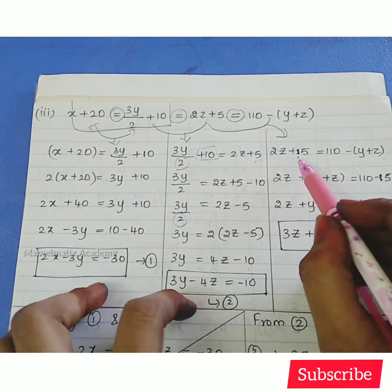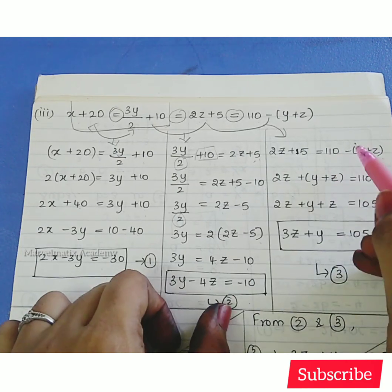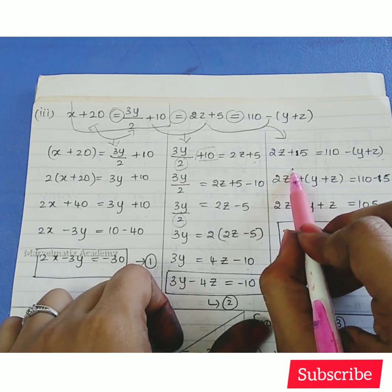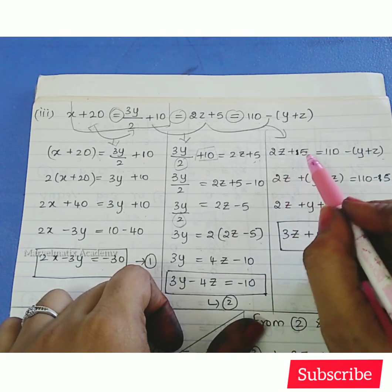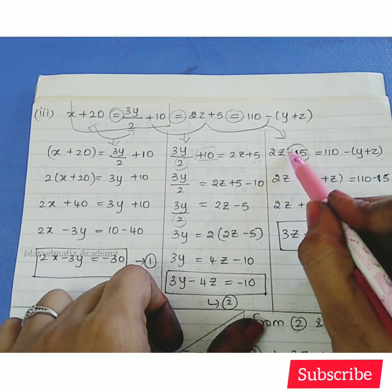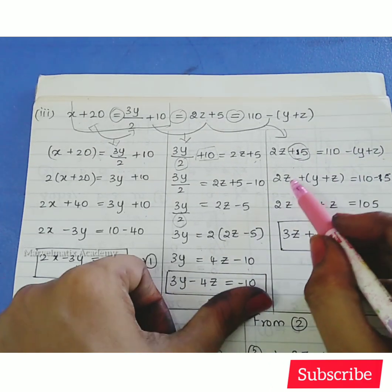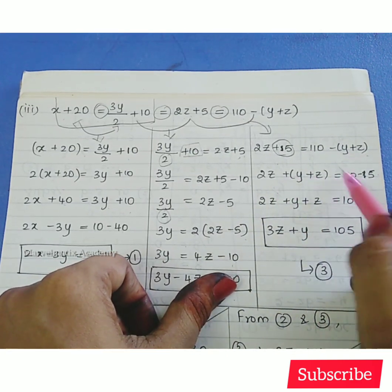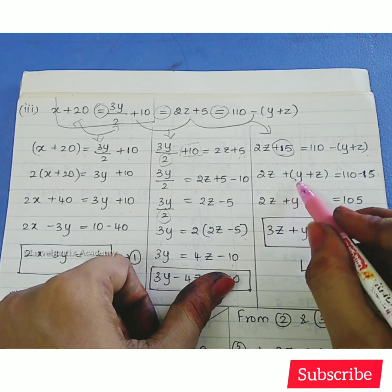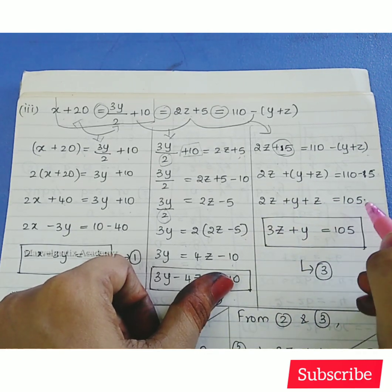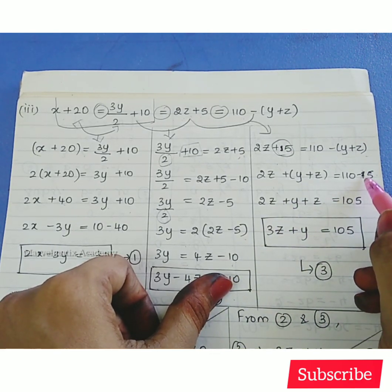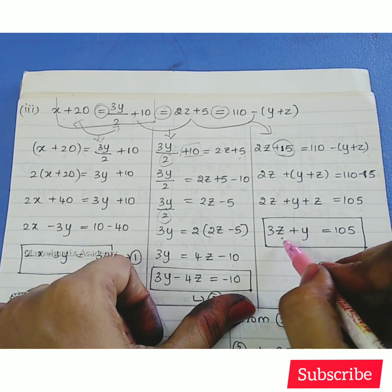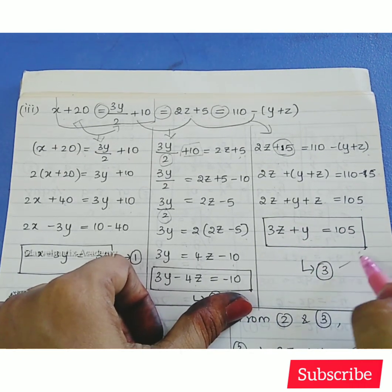Continuing with 3y by 2 plus 10 equals 2z plus 5: shifting numbers gives 3y by 2 equals 2z minus 5. Multiplying through by 2, we need to add y and z terms. After rearranging: 3z plus y equals 105. This is the third equation.